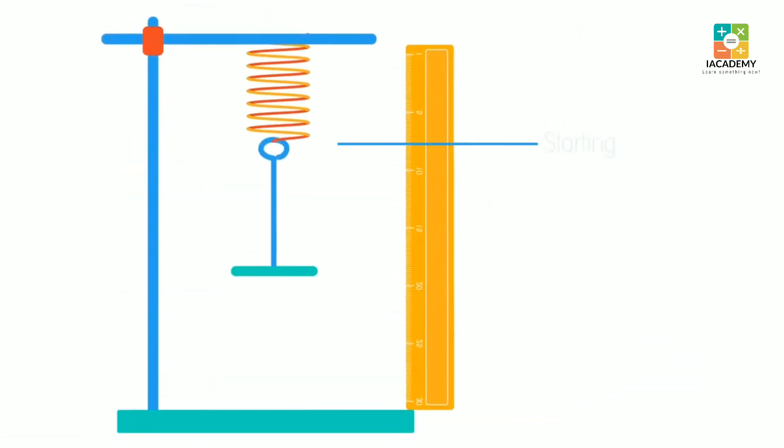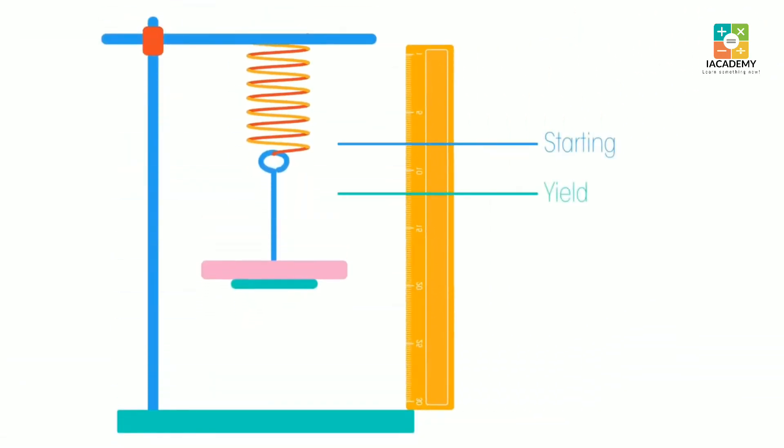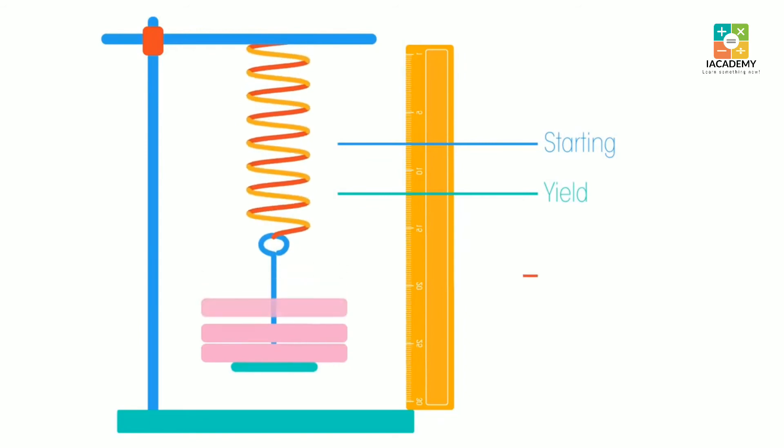We can also see the yield point, or elastic limit, in a classroom by applying extra weight to a spring, until the spring doesn't return to its starting shape.